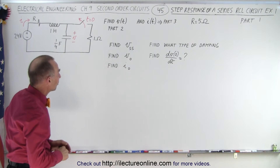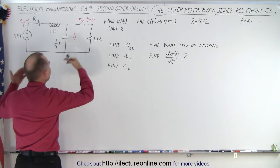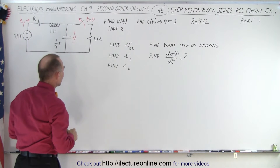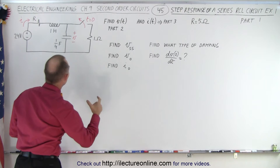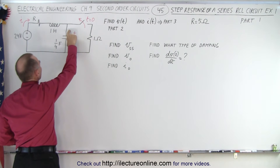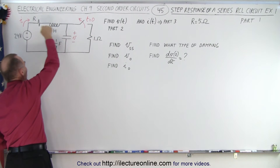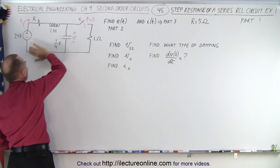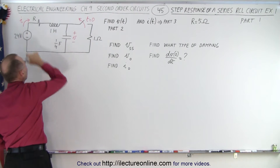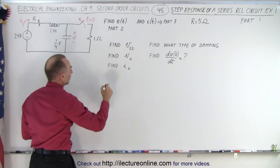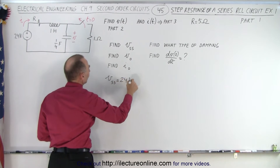First, the steady state voltage — what happens when the switch opens and things go on long enough that the transient period is finished, and what will be the steady state voltage across the capacitor? When the switch is open long enough and current flows long enough, the capacitor will fill up with charge, current will stop in the circuit, and the voltage across the capacitor will equal the voltage across the source. So the steady state voltage is 24 volts.